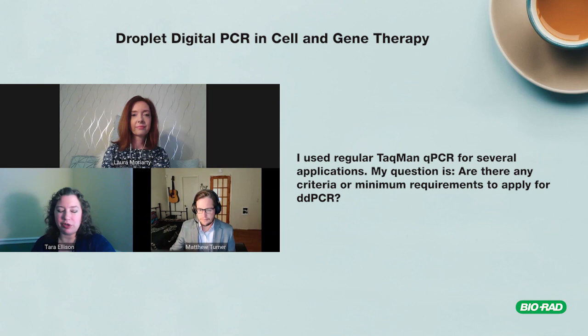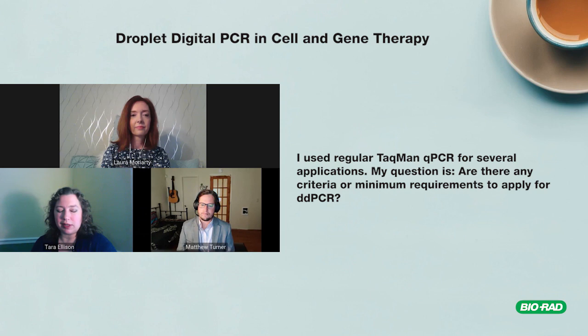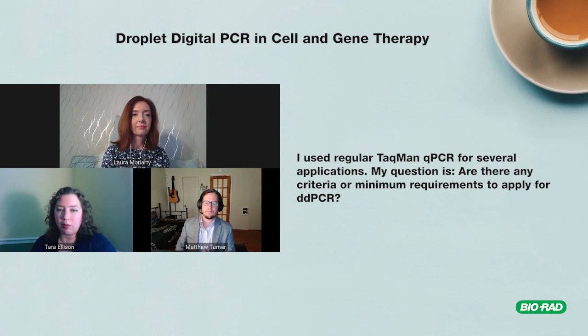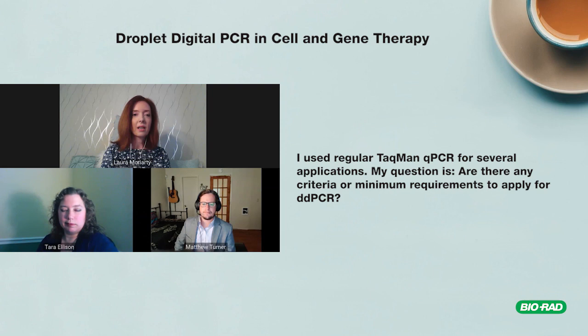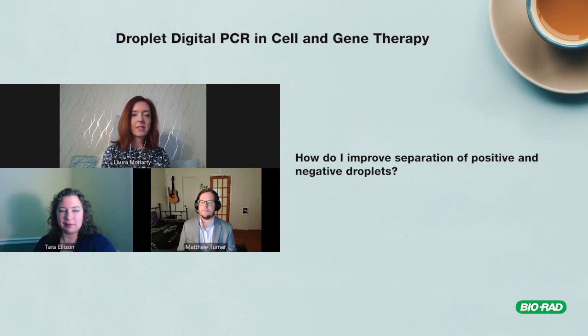A couple of minor additional points: TAMRA is a fluorescent quencher that is not very compatible with droplet digital PCR, though it's not common anymore. Most other quenchers are fine. When taking a well-optimized assay from qPCR to ddPCR, some optimization may be required — mainly the PCR annealing temperature, since the supermixes are a little different.